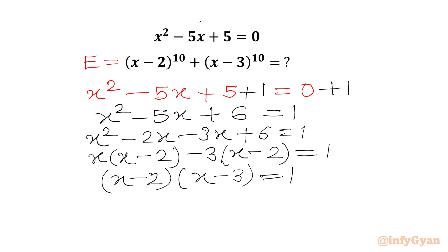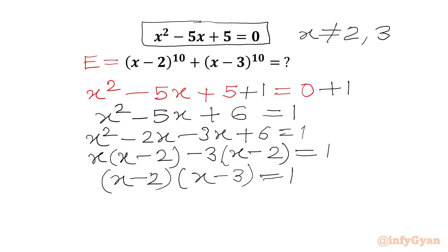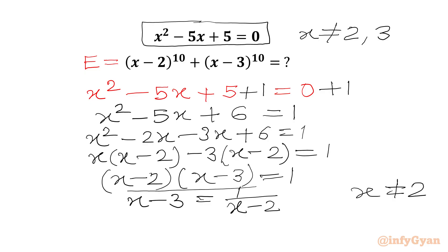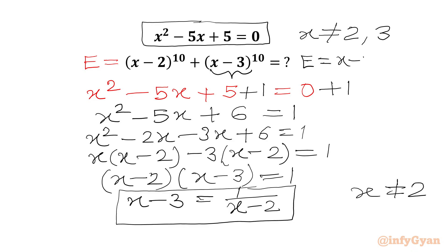If we check our original equation, x cannot be equal to 2 and x cannot be equal to 3, as they do not satisfy the equation. So from (x - 2)(x - 3) = 1, dividing both sides by (x - 2), we get x - 3 = 1/(x - 2), where x ≠ 2.